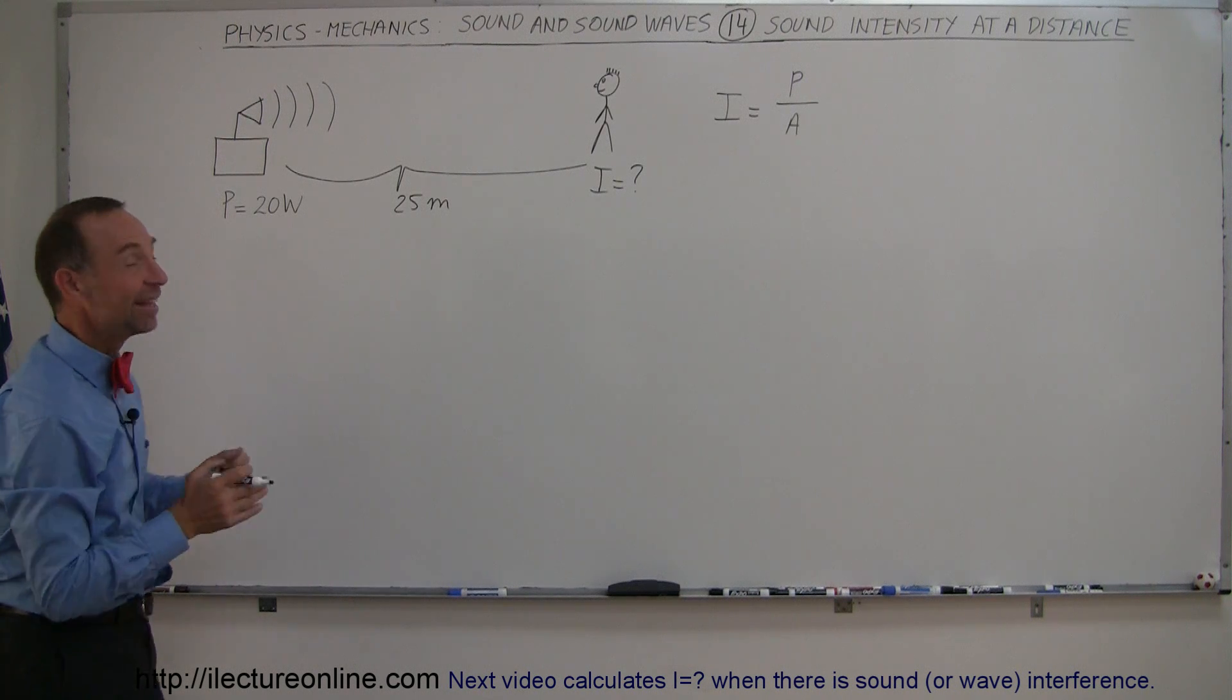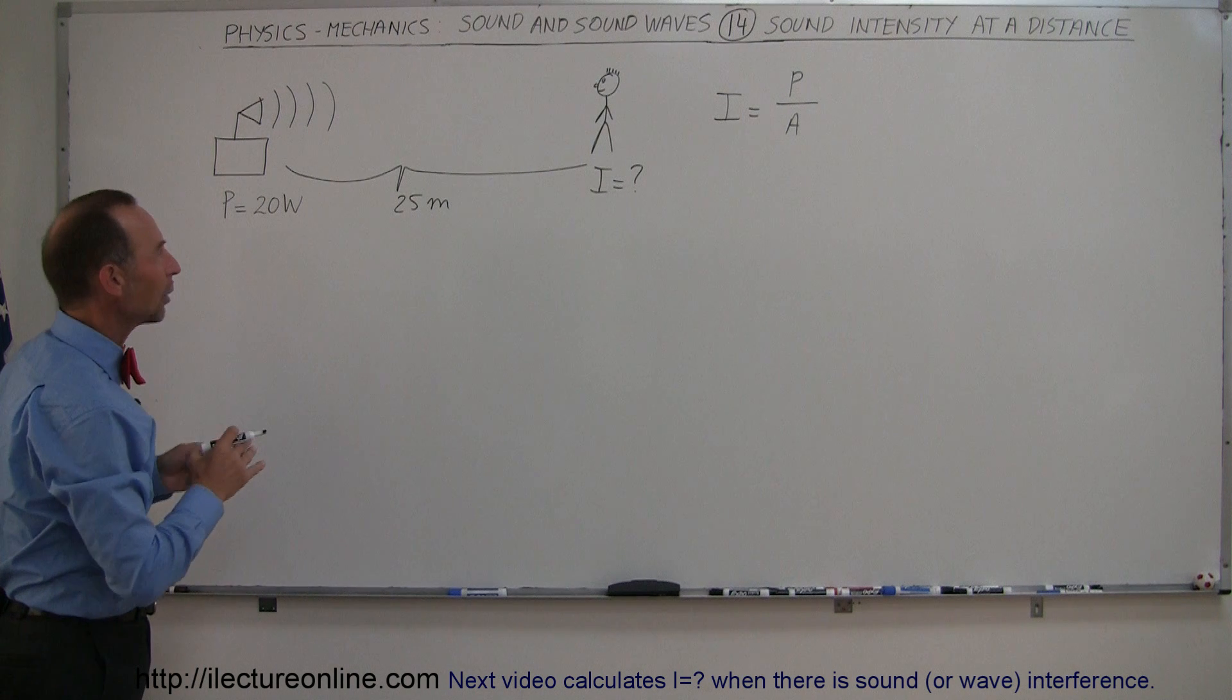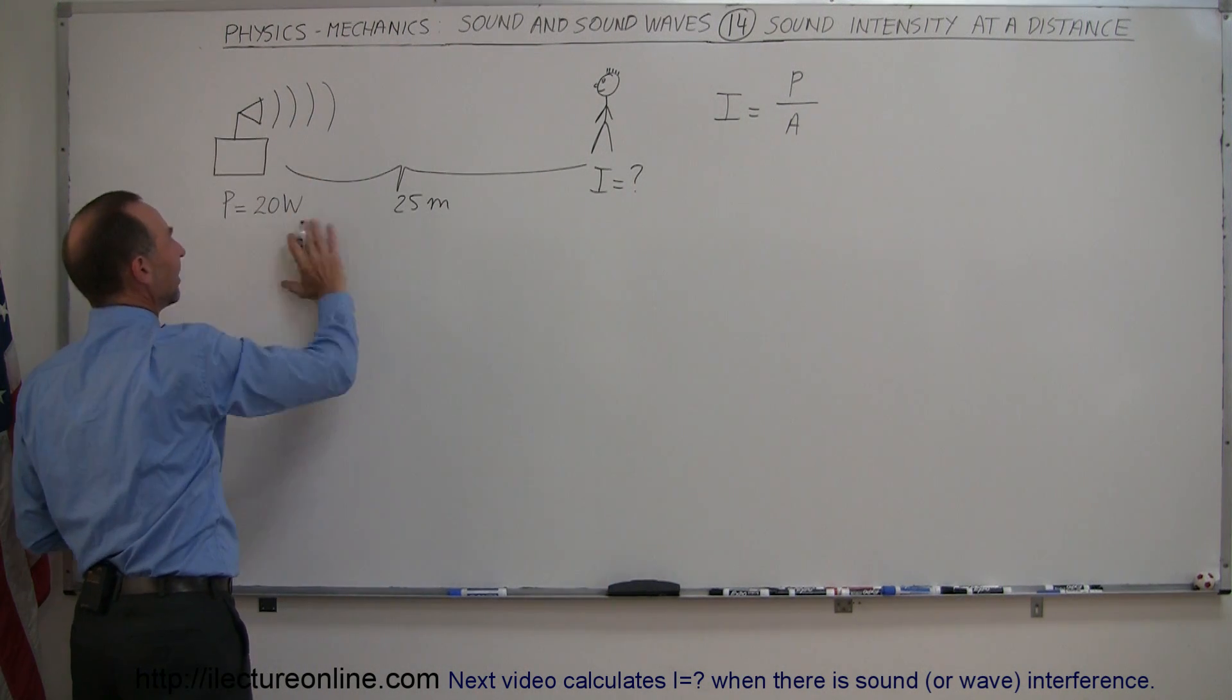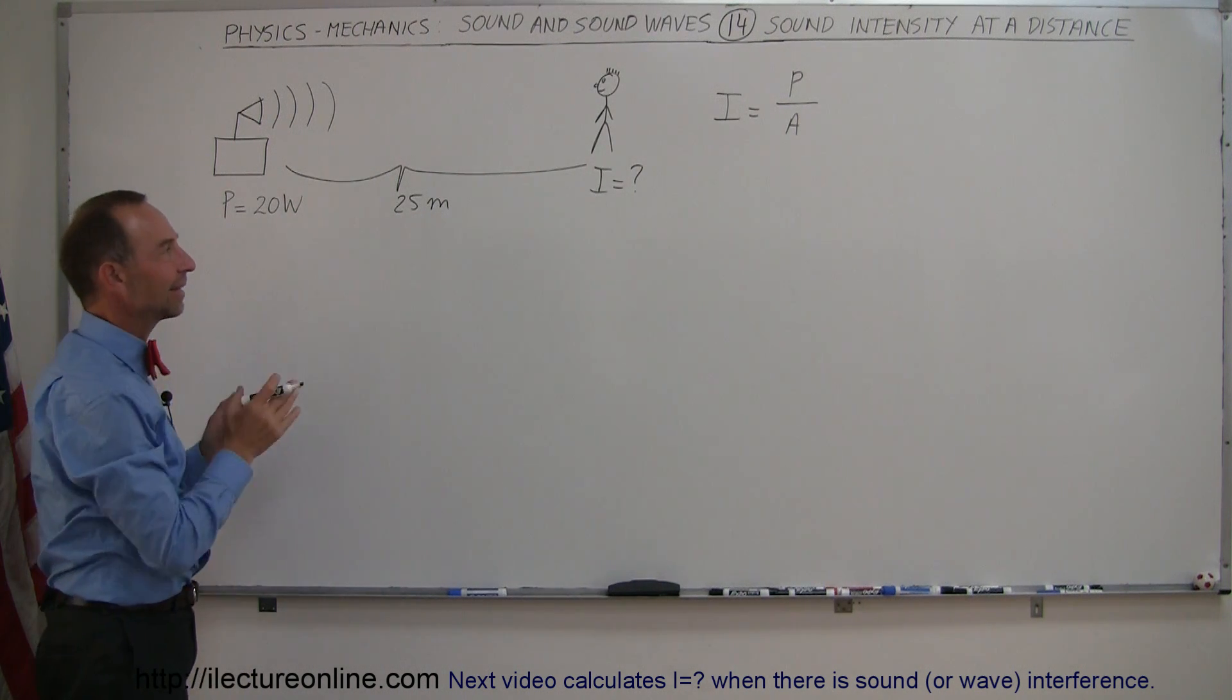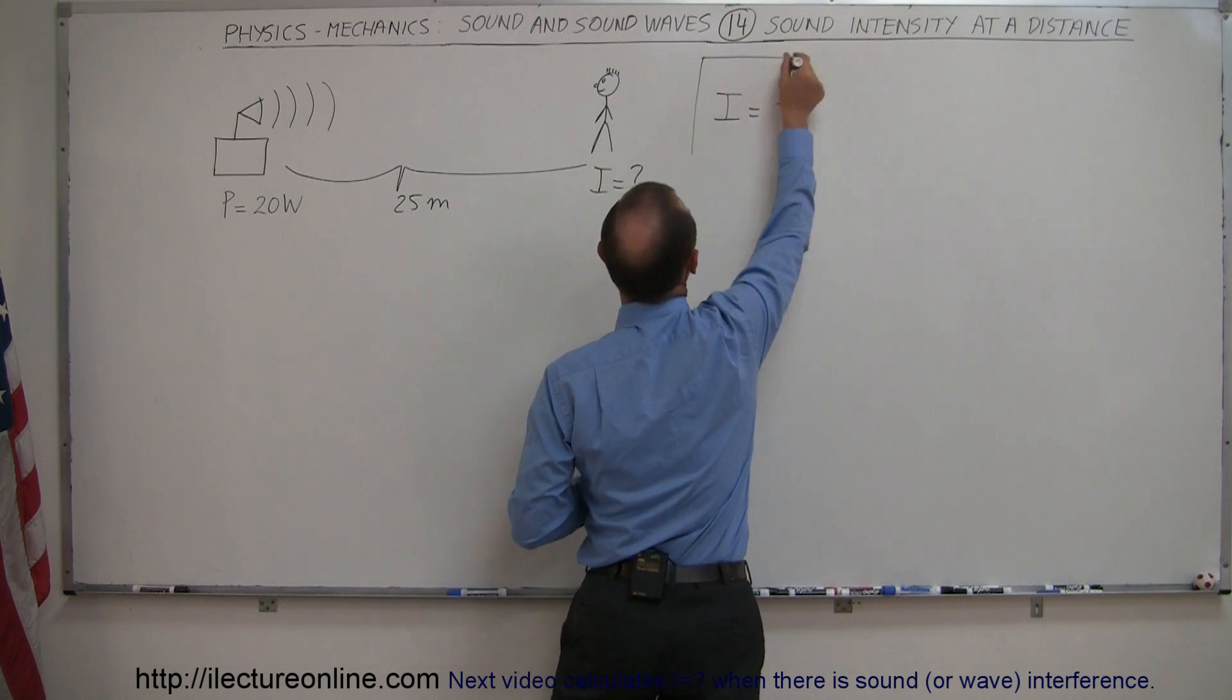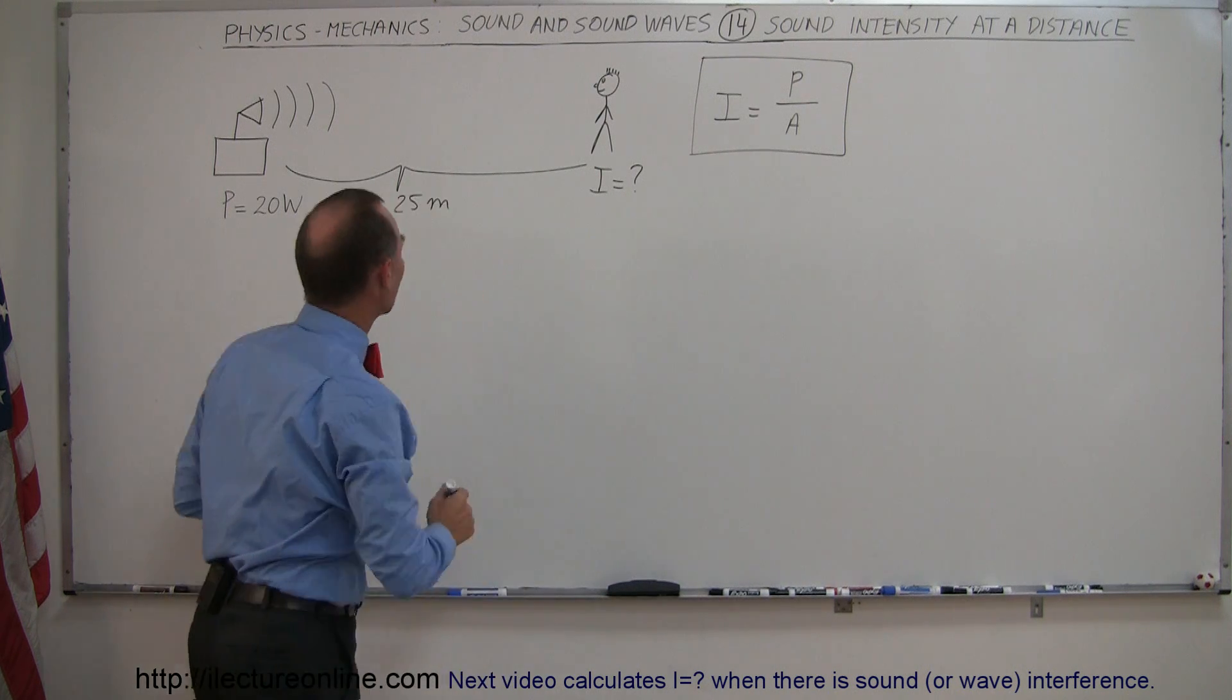Here is a new video on sound intensity, and here we're doing a more formal look at how the intensity that we hear from a source at a distance away that puts out a certain amount of sound - what the intensity is like at that distance. The equation we use for that is fairly simple. The intensity we hear is equal to the power of the source divided by the area over which the sound spreads.